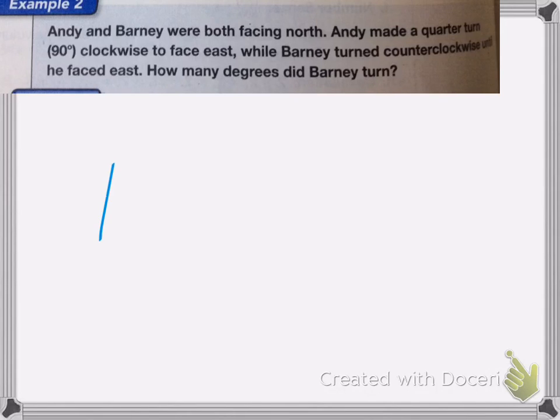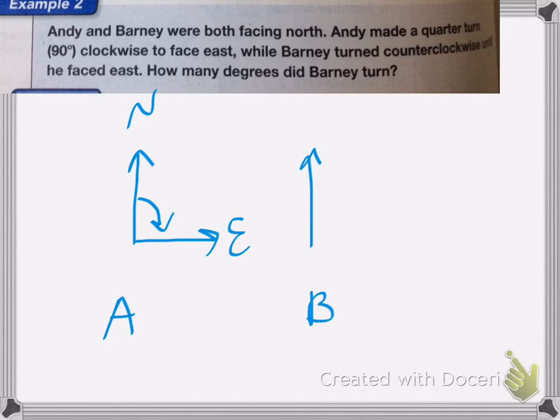So again, both people are facing north. So here's Andy, here's Barney. So Andy made a quarter turn clockwise, which is to the right, to face east. So here's north east. So he turned 90 degrees.